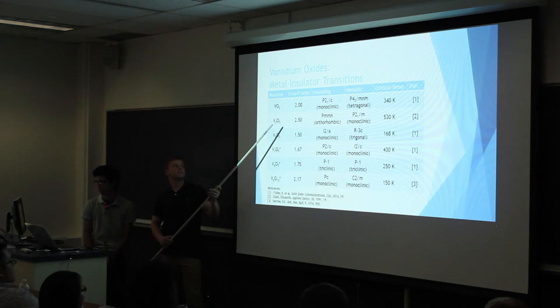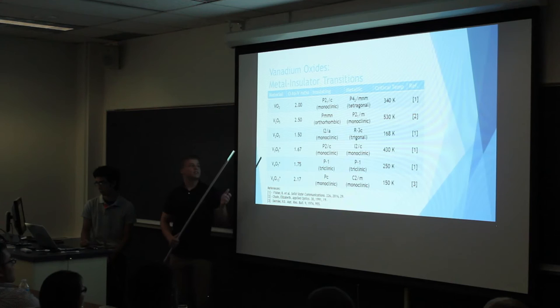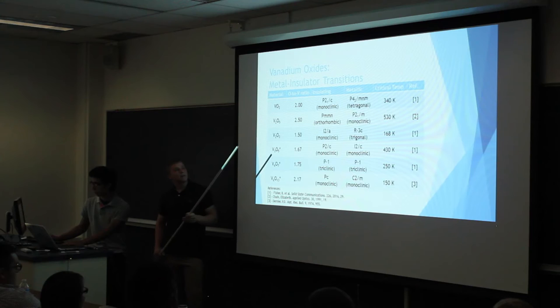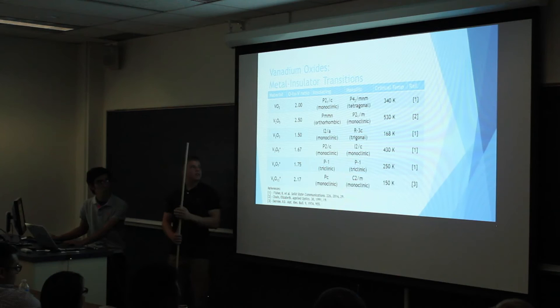Here's a table with a bit of information about each of the allotropes I'm going to be studying. You can see the oxygen-to-vanadium ratios, with the smallest being 1.5 and the largest being 2.5. I also have the space groups and structure types of each. Some vary between phases, such as V2O5, which goes from orthorhombic to monoclinic. Whereas with V4O7, it stays triclinic and even the space group stays the same. The critical temperatures vary for each, which would allow each allotrope to be used for something different.